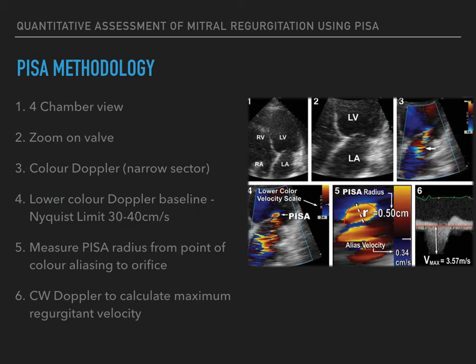Within the PISA are many hemispheric shells. By selecting the shell where aliasing occurs — where there is a distinct colour change, normally from red to blue or blue to red — we know definitively that the velocity at this point is the aliasing velocity, or Nyquist limit, as shown on the colour Doppler scale. Zooming up on the mitral valve in the apical 4-chamber window and shifting the colour Doppler scale downward to approximately 40 cm per second optimises the aliasing velocities, making the PISA hemispheric zone bigger and more measurable.